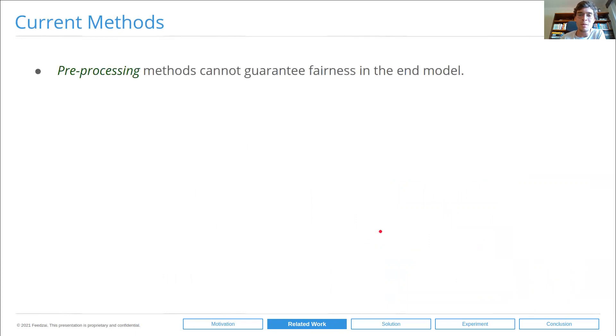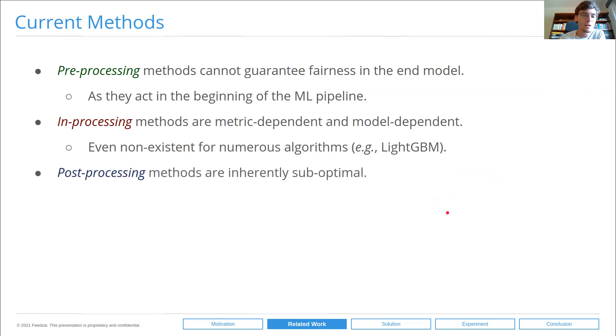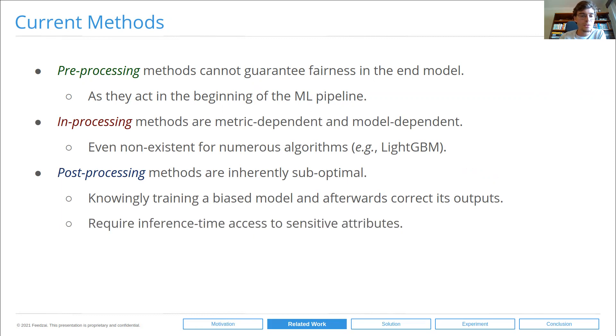However, pre-processing methods, by acting in the beginning of the ML pipeline, cannot guarantee fairness in the end model. Bias is corrected in the beginning of the ML pipeline, but we are not guaranteeing that after all the steps have been taken, bias has not reemerged in the end. In-processing methods are either metric dependent or model dependent, and often non-existent for numerous algorithms, for instance, like GBM. And post-processing methods are arguably inherently suboptimal because they act on an already trained model. After a biased model is trained, they attempt to correct its outputs. Additionally, they require inference time access to sensitive attributes, unlike most in-processing and pre-processing algorithms. Overall, all methods invariably introduce complexity to real-world ML pipelines, making it difficult to achieve widespread adoption.